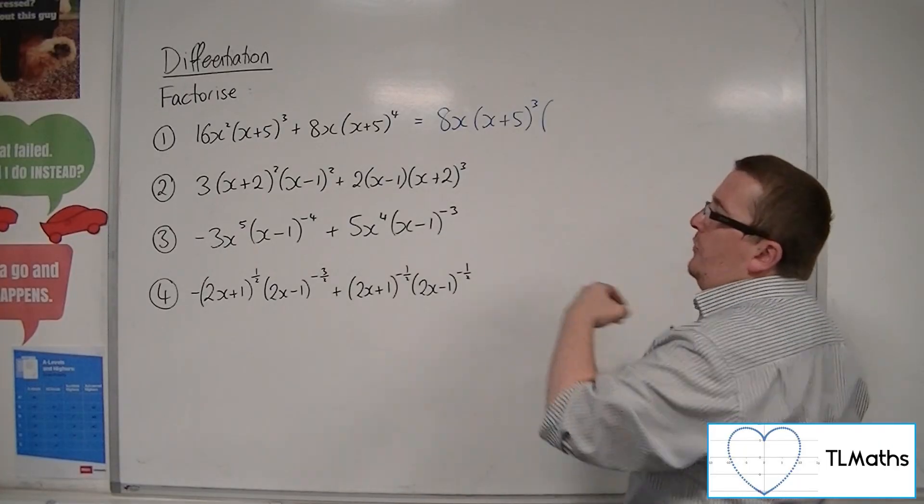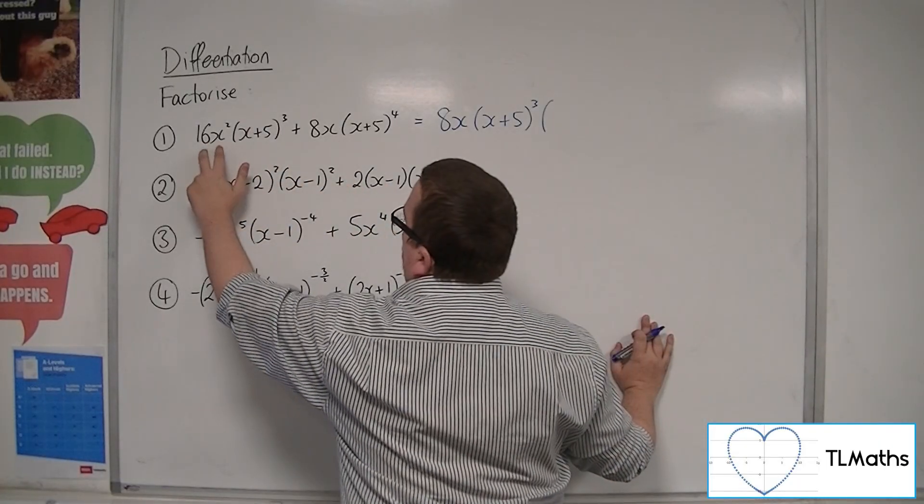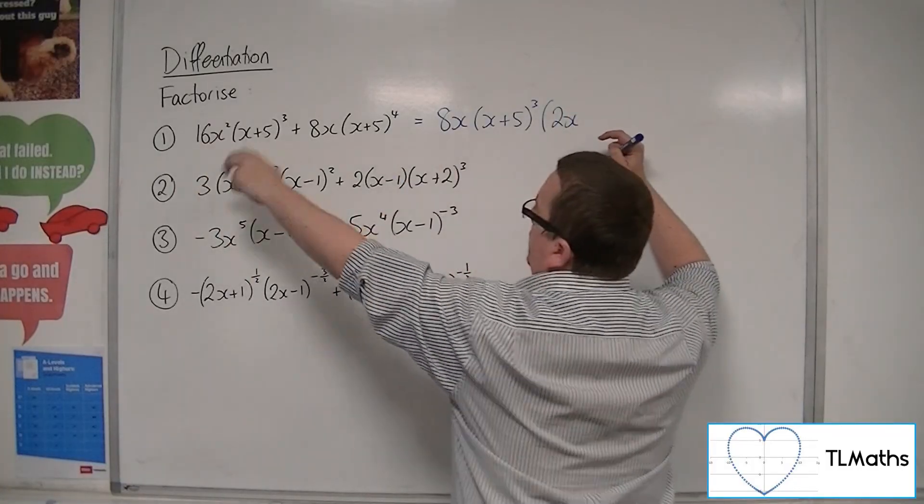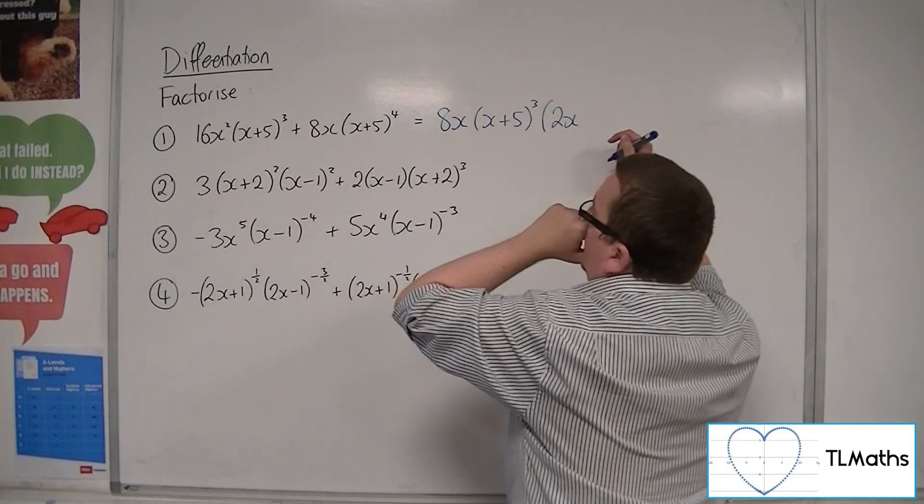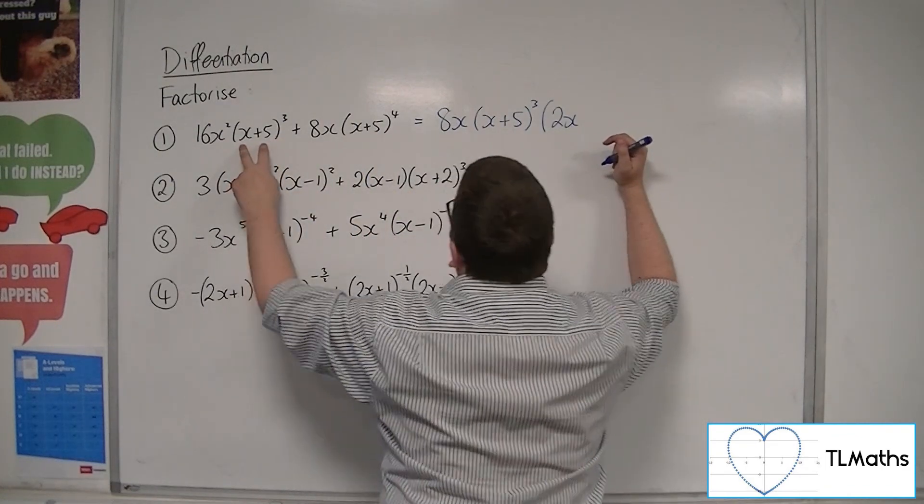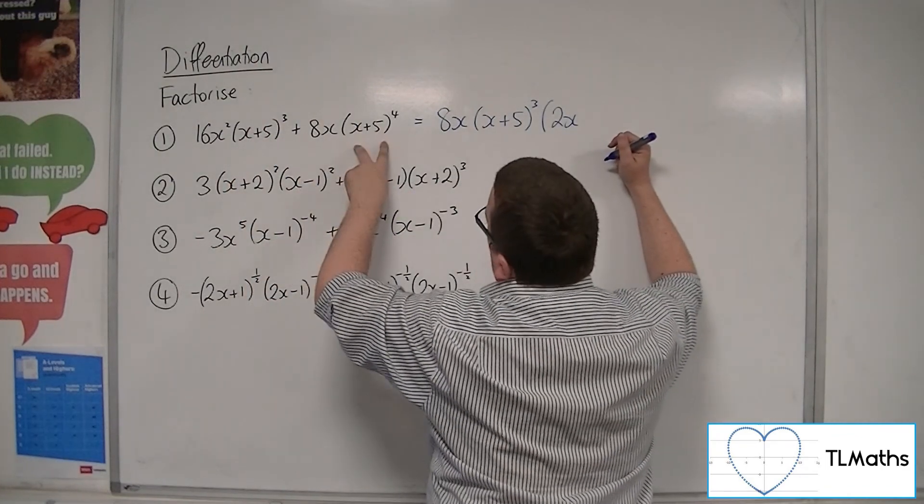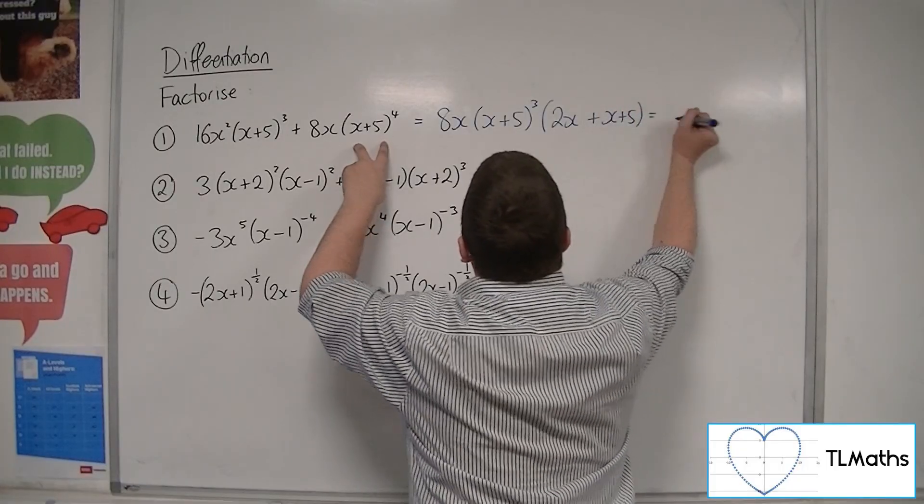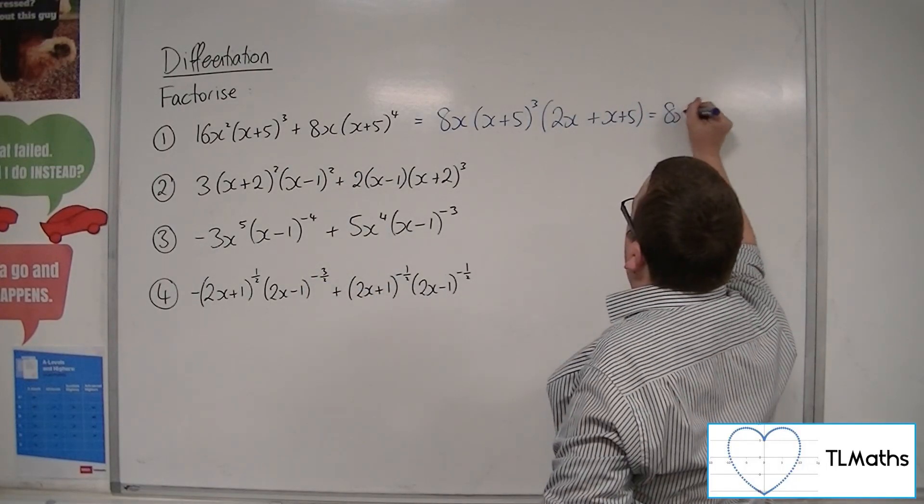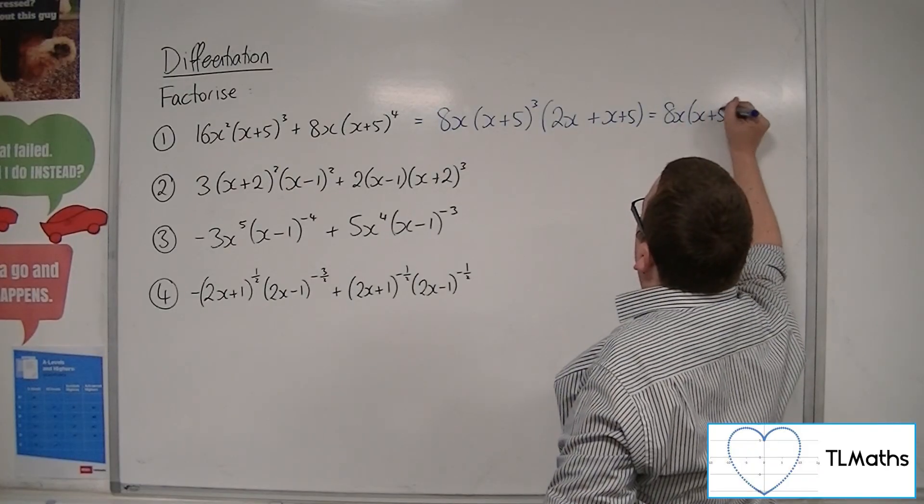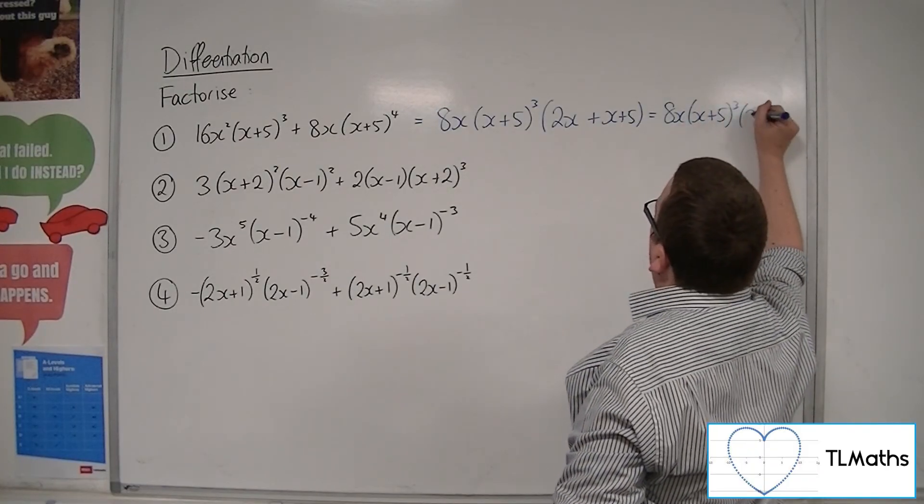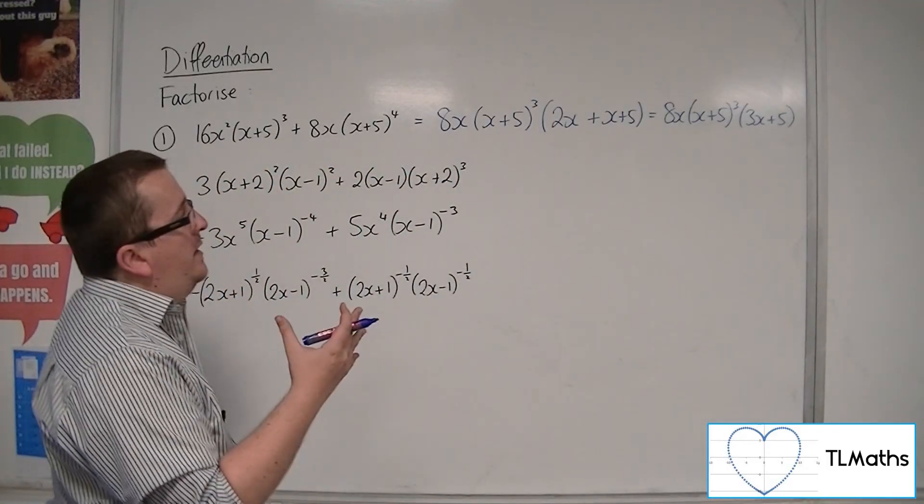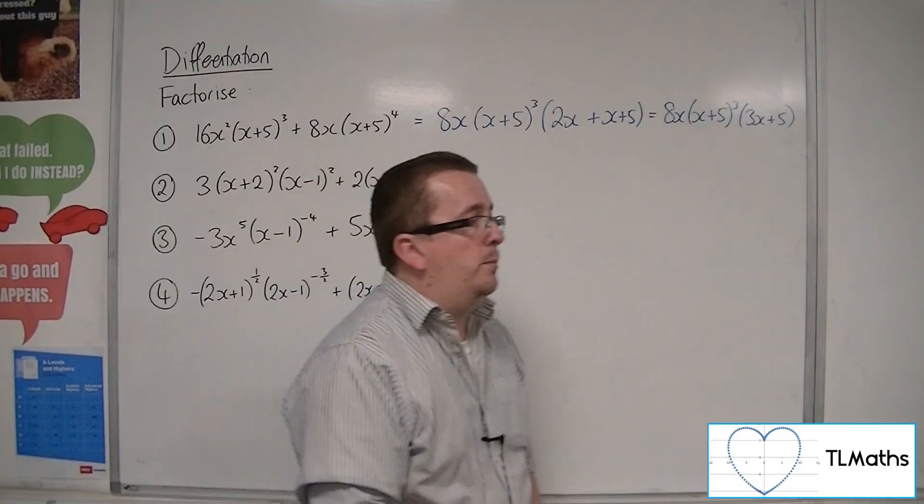So what that leaves us is we've got a 2x from the 16x² to multiply with the 8x to make the 16x² there. The (x+5)³ is covered. The 8x here is covered, but we don't have that (x+5), so we're going to have to have that as well. So that's 8x(x+5)³, and we'll have (3x+5) from that bracket there. And now that's in fully factorized form.